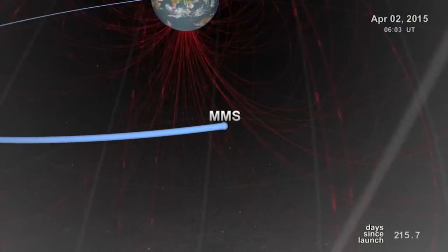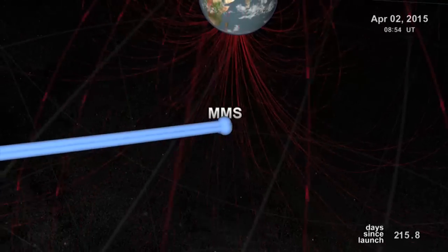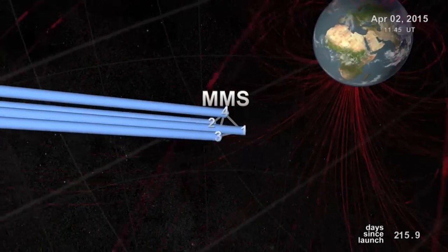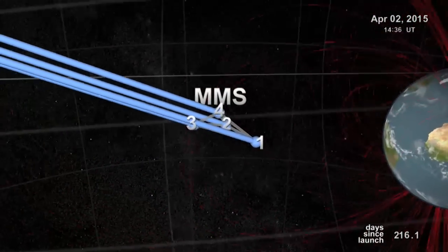The MMS mission is a mission consisting of four spacecraft which will fly in close constellation to measure a process called magnetic reconnection. We need to measure reconnection in more than one location. We need to measure it in basically how it varies in space, how it varies in all three spatial dimensions.